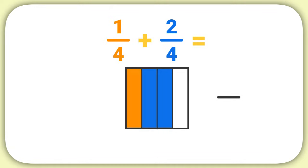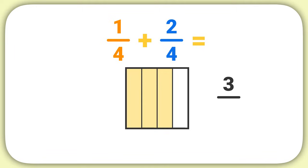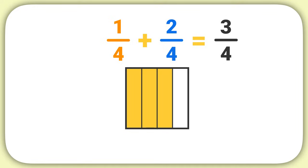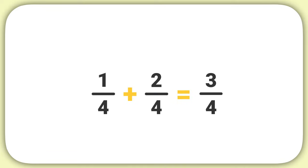Well, I can see that one, two, three pieces of my model are shaded. The numerator of my fraction will be three. Then I can count that there are four total pieces in my model, so the denominator of my fraction is four. The answer to this problem is three-fourths. One-fourth plus two-fourths is three-fourths.